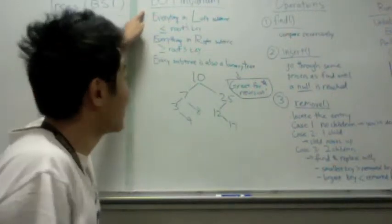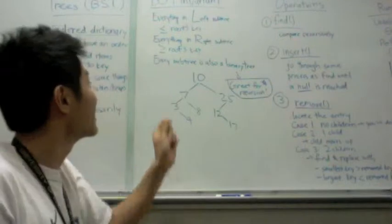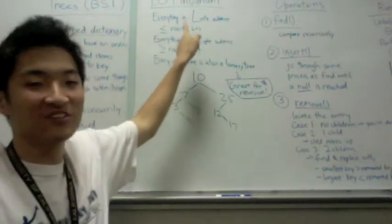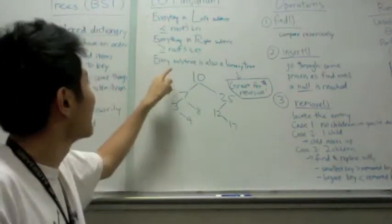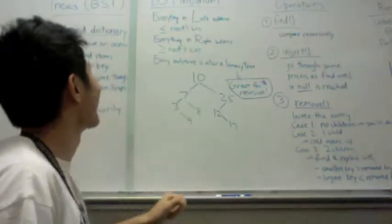So first, the binary search tree invariant tells us that everything in the left subtree is less than or equal to the root's key. You can think of left and less as starting with L.